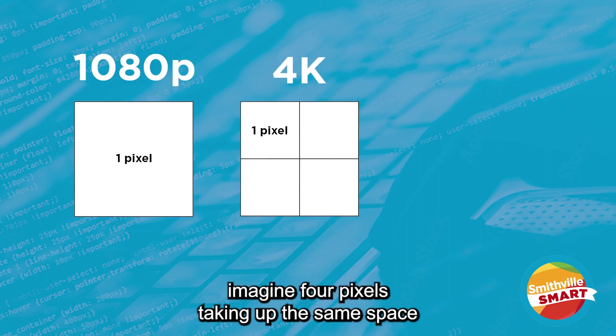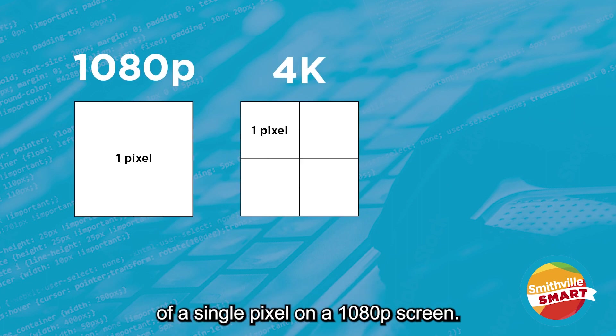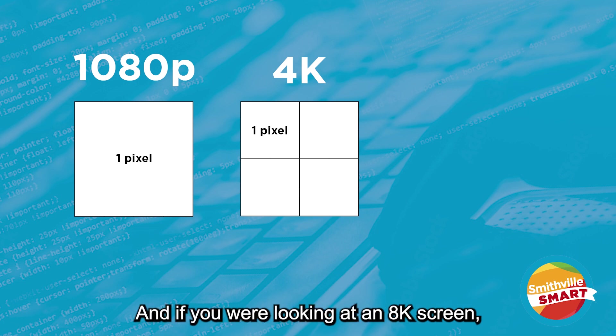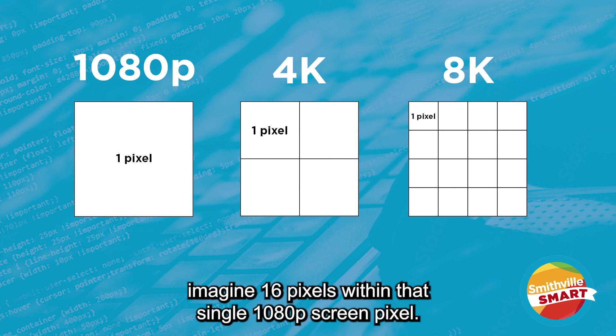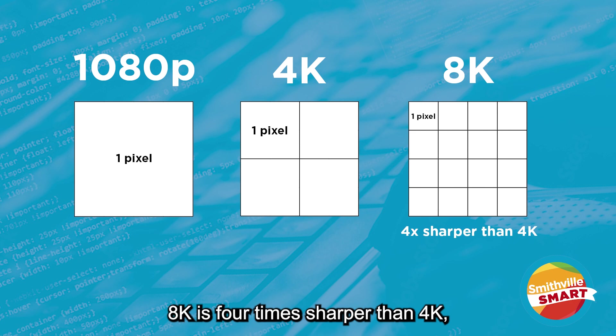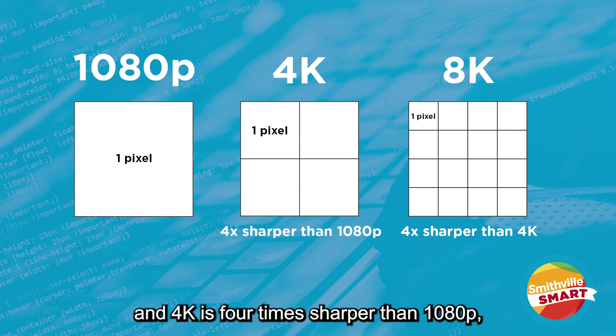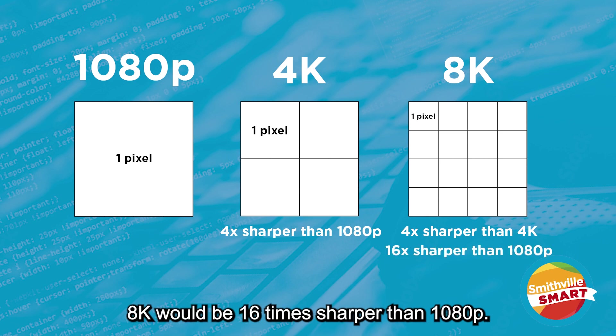If you can imagine 4 pixels taking up the same space of a single pixel on a 1080p screen — and if you were looking at an 8K screen, imagine 16 pixels within that single 1080p screen pixel. 8K is 4 times sharper than 4K, and 4K is 4 times sharper than 1080p, meaning 8K would be 16 times sharper than 1080p.